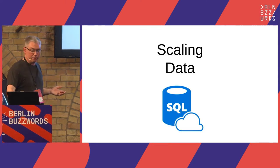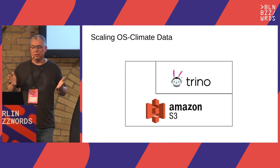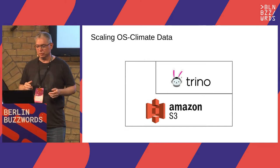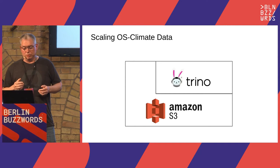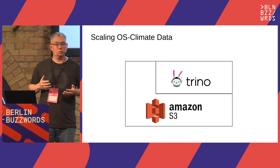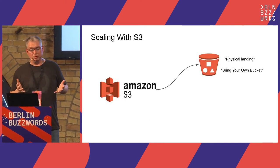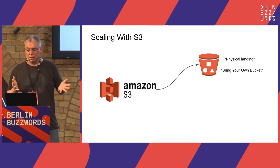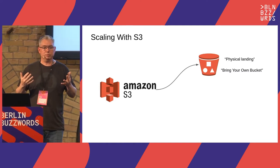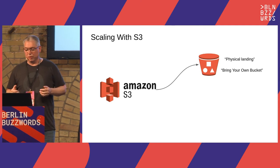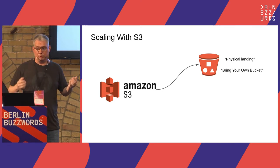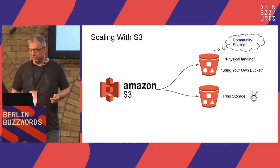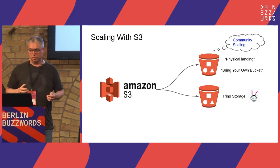What about scaling our data? The two main technologies we're using right now are S3 and Trino, which is a scalable SQL database. S3 allows multiple kinds of scaling, both physical and community. It allows us to provide what we're calling the physical landing bucket — a place for people to bring raw data and dump it there as staging. It also allows community members to bring their own bucket. So this is not just storage scaling — it's a community scaling enabler. Trino itself uses S3 as backing store for certain kinds of catalogs and connectors.